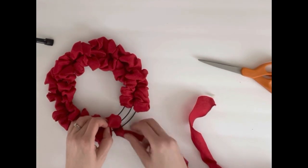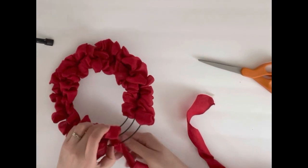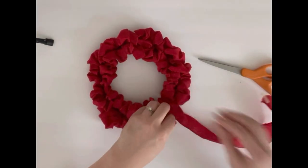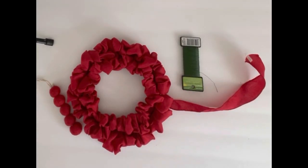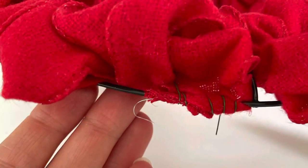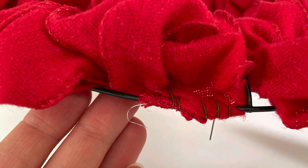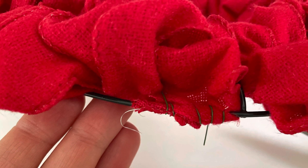Once you've finished your ribbon length or come to the end of the ribbon, attach it back onto the wire wreath form with the floral wire. Just like you did at the beginning, fold it in half and twist the floral wire around the ribbon securing it onto the wreath form.